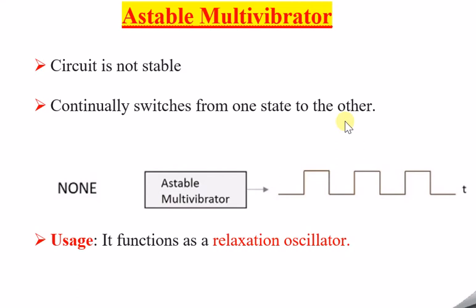What is the state being referred to here? The state referred to is nothing but the state of the amplifiers. In the previous session on multivibrators, I discussed that multivibrators are represented in a block diagram with one amplifier connected to another amplifier with positive feedback. The state of each particular amplifier is what is being referred to here — it continuously switches from one state to another state and will never be stable.